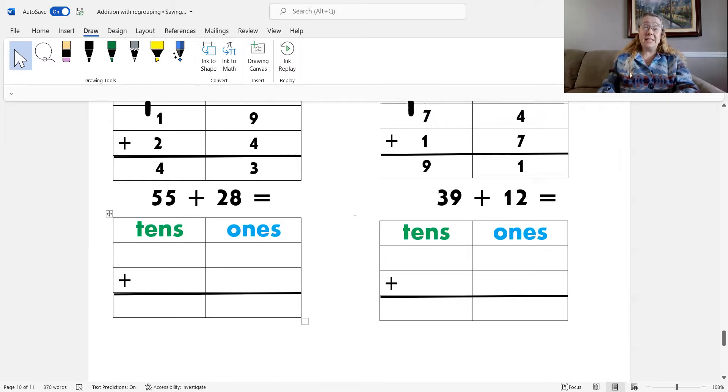55 plus 28. Do you remember the first step? Yes. Place the addends into the place value chart. So, the first addend is 55 and it has... You got it. 5 tens and 5 ones. And 28 has... 2 tens and 8 ones. Yes. Okay, what's my next step?